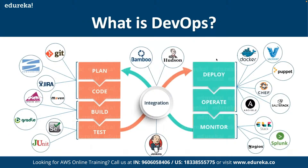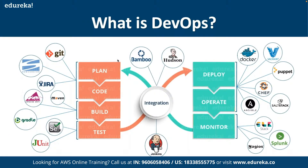DevOps is basically a combination of eight core phases, starting with the planning phase. The planning phase involves planning the entire application layout, including git configuration, the entire application workflow, what platforms will be needed, how the entire timeline is going to be distributed. For planning, we use tools like Jira, Planner, and similar components.